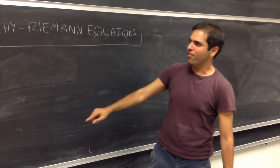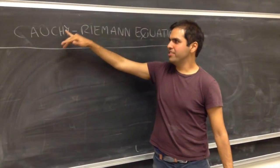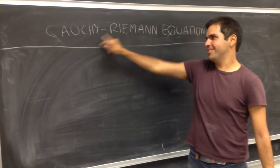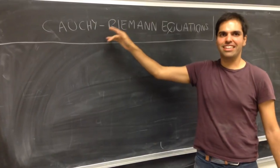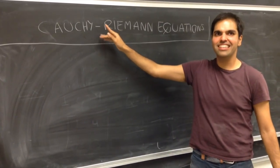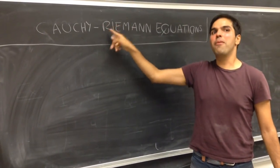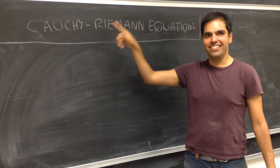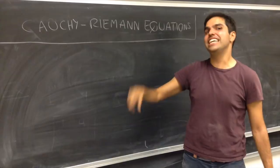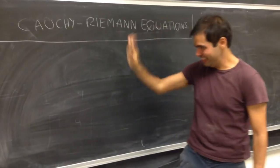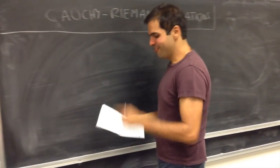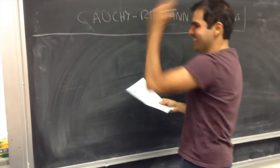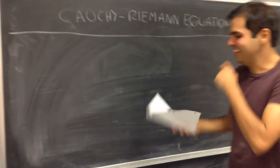First of all, notice two names — maybe the two biggest names in analysis. So it's probably an important equation. If you have Cauchy and Riemann, you know, French and German together. Very nice.